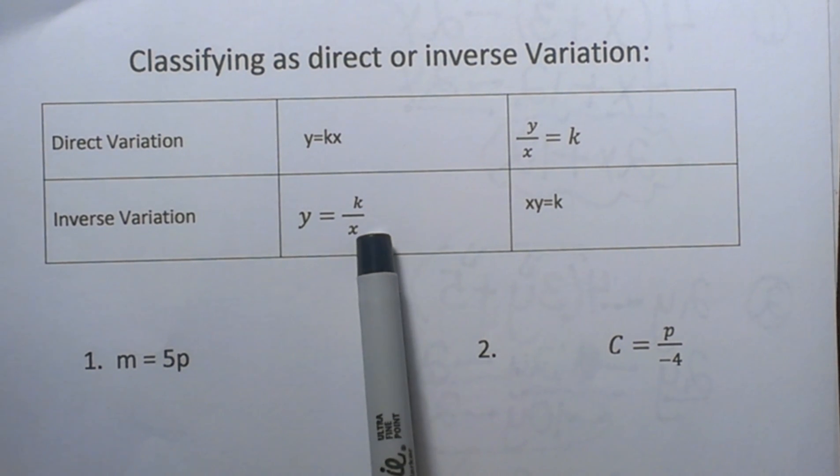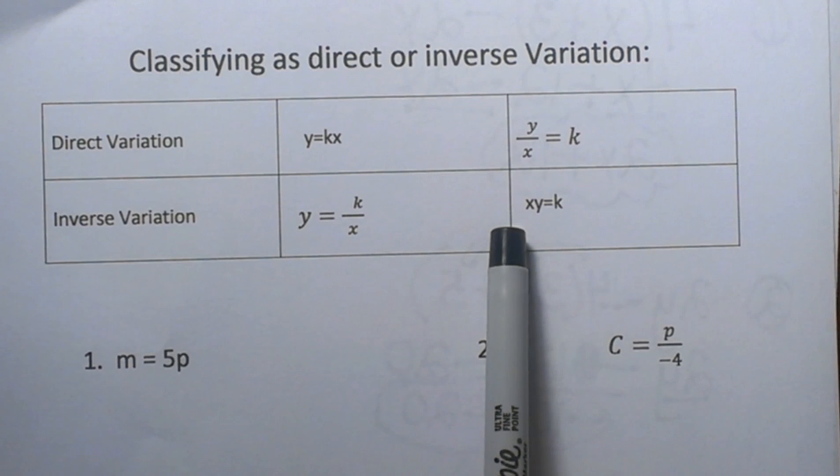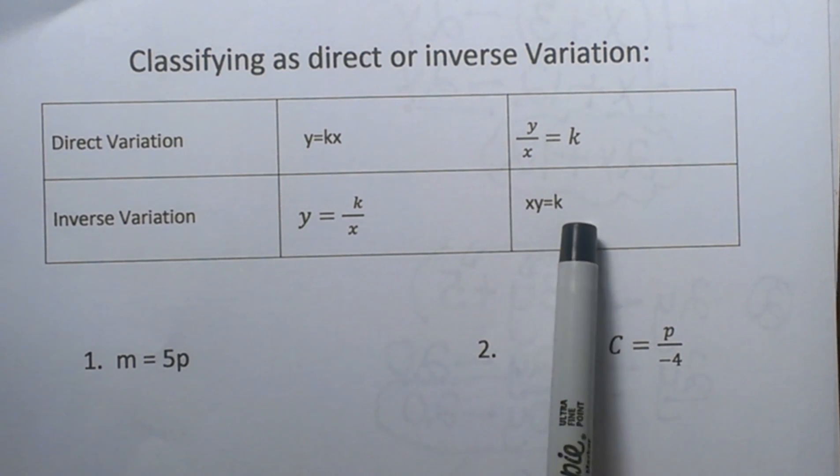You can change the form of this by multiplying both sides by x to get rid of the fraction and get to the form x times y is equal to your constant.